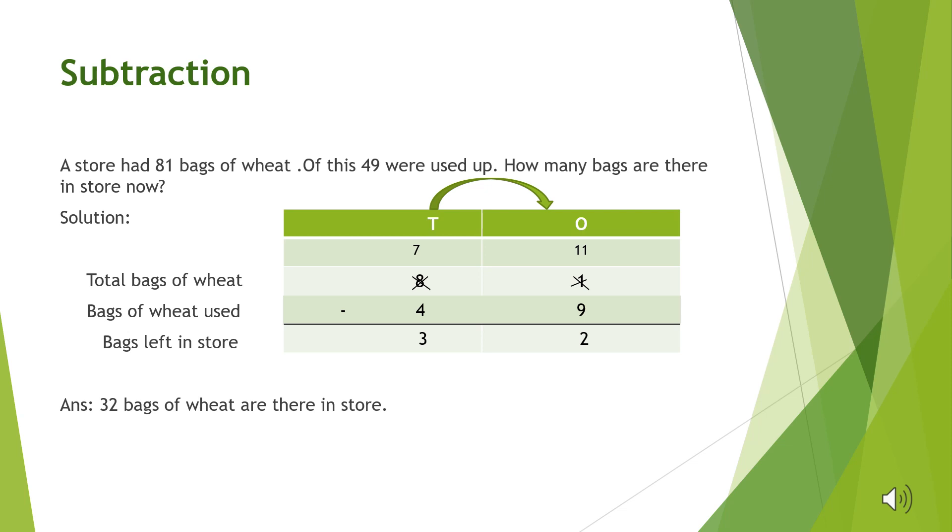In the question given, a store had 81 bags of wheat. Of this, 49 were used. How many bags are there in the store now? We can see that the number of bags will be reduced as 49 bags out of 81 were used. So to find the number of bags left, we will reduce 49 from 81.